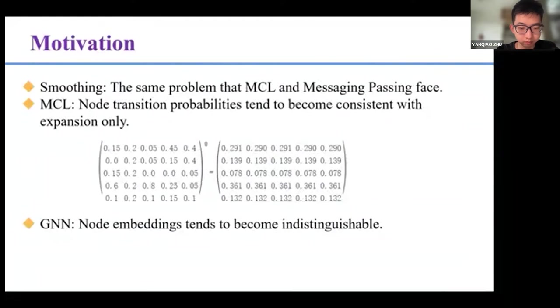At the same time, graph neural networks face the same problem that node representations tend to be indistinguishable rather than the transition probabilities. We regard the message passing or the convolution of the graph as the expansion in MCL. Then, we can use the same inflation method to resharpen the representation of nodes.